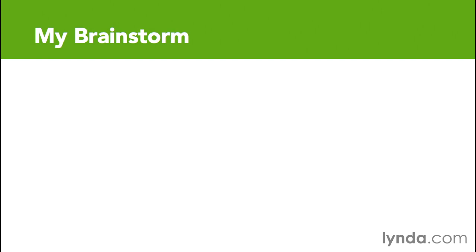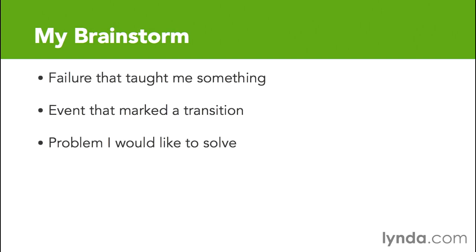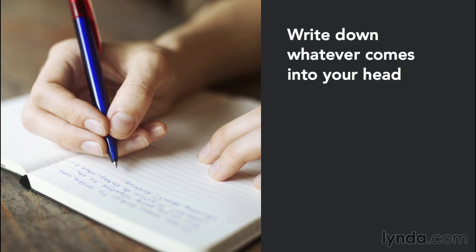If you're choosing from among the five Common App prompts, start by brainstorming a list of ideas for at least three of the five. If you're generating a topic from scratch, you can follow this same process — you may even want to adapt one of the Common App prompts to give you a place to start. Set a timer for two or three minutes and write straight through. Don't worry about spelling, punctuation, or sentence structure — just write down whatever comes into your head.